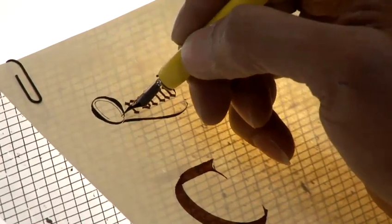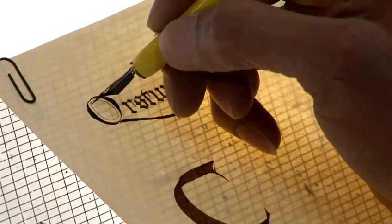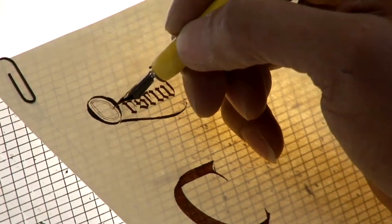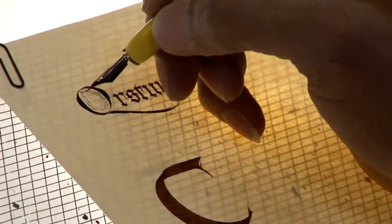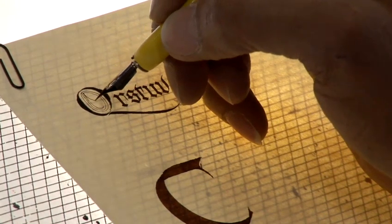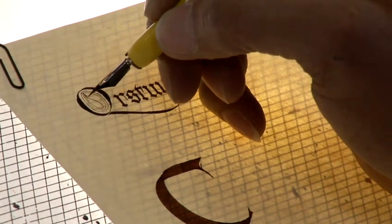So I'm using one of the manuscript pen company nibs because I need a really fine nib for outlining, and then I'm going to do an internal border and then I am going to do another border.